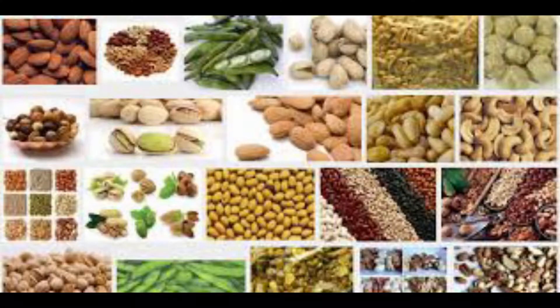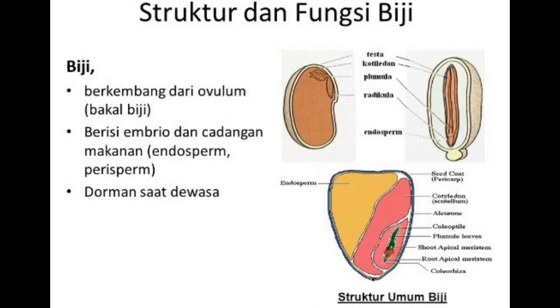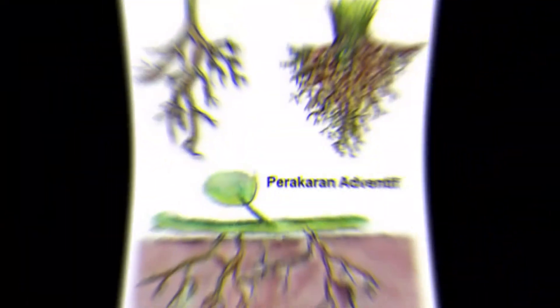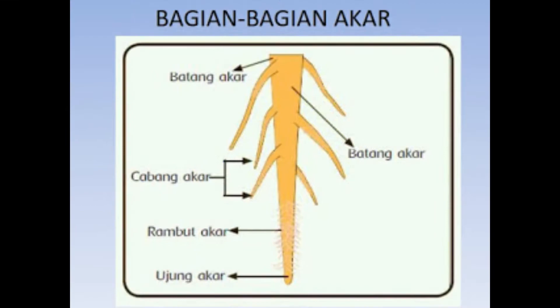Number 1: Seed. The first part of the plant is the seed. These seeds are found in the flower of the plant. Number 2: Roots. Roots have a duty to find and absorb water and minerals or nutrition in the soil.